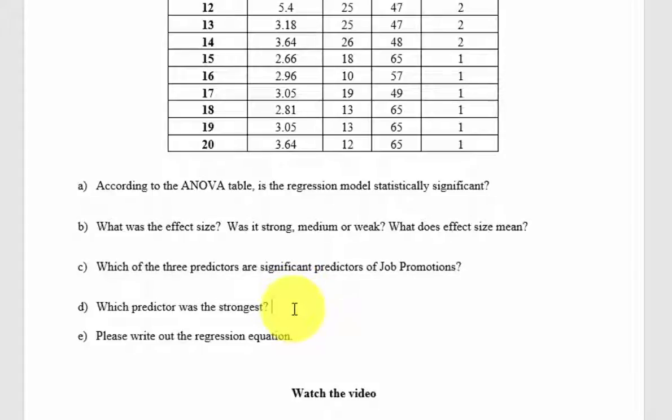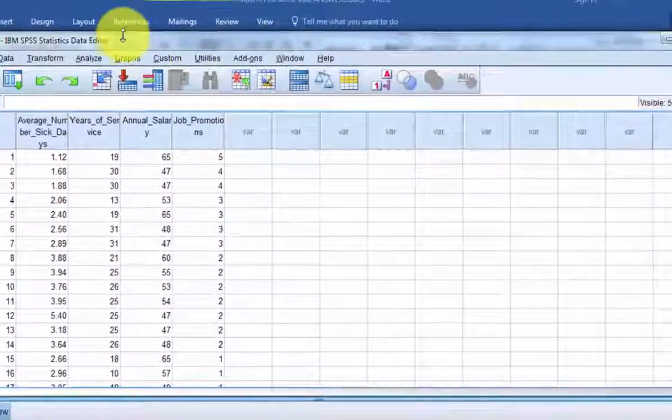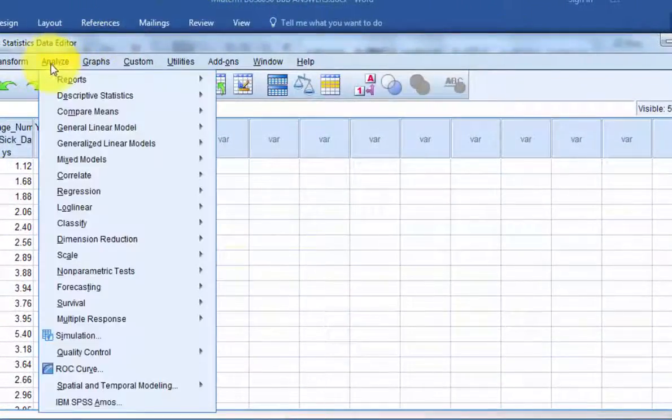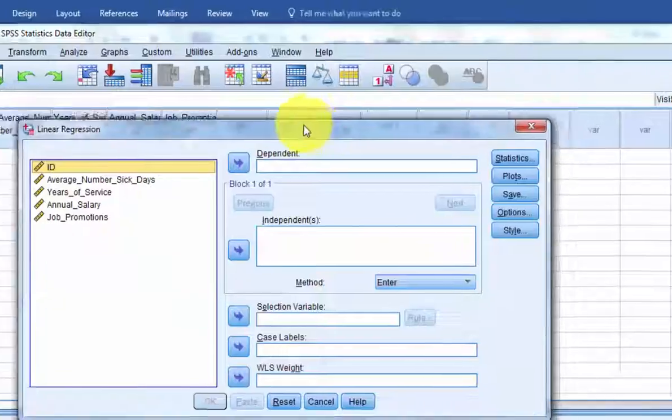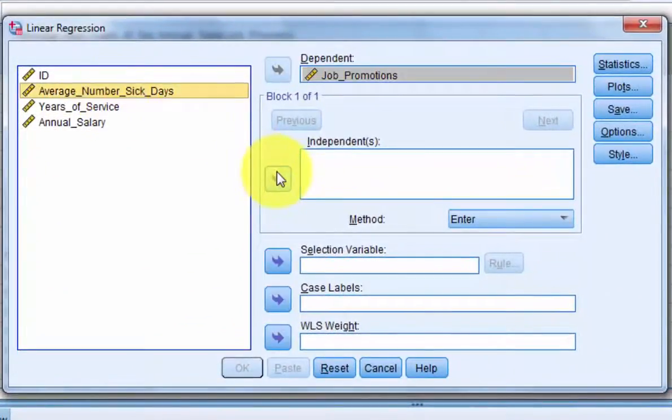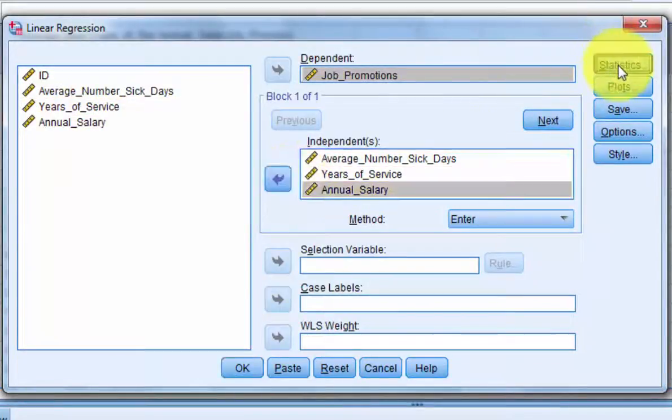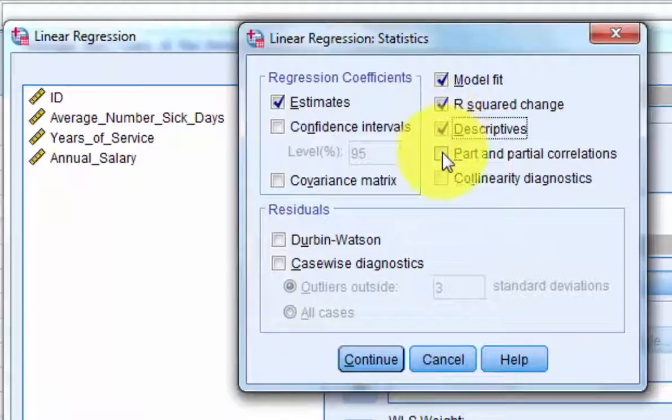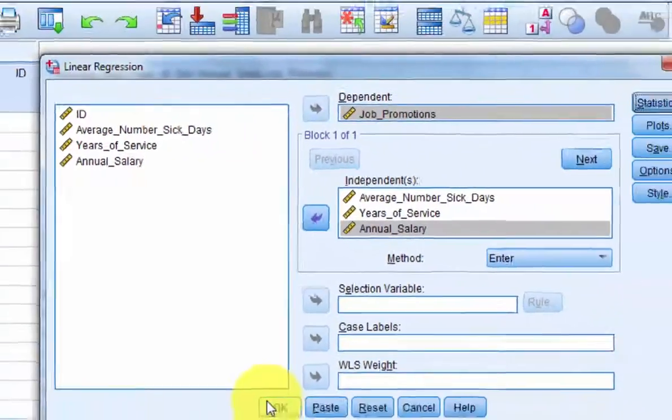And which predictor was strongest? That means we have to do this in SPSS. Good thing I got it ready here. So in SPSS, you're going to go to Analyze, Regression, Linear. We always assume the data is linear in these regression models. And we're trying to predict job promotions using sick days, years of service, and annual salary. We should get the same results. You always want the top five over here, the Durbin-Watson. Click OK.